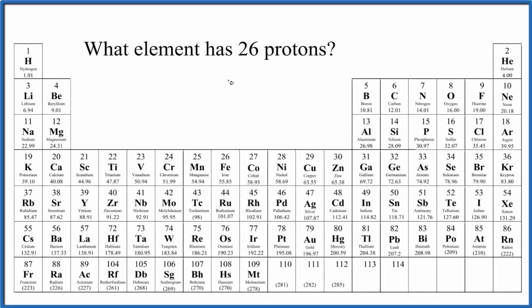So how do we know which element on the periodic table has 26 protons? The answer is pretty easy, because the periodic table is organized by the number of protons.